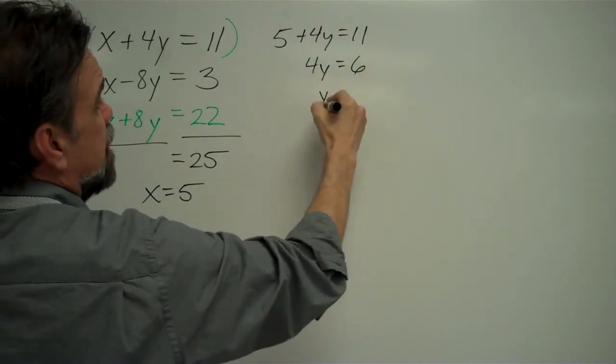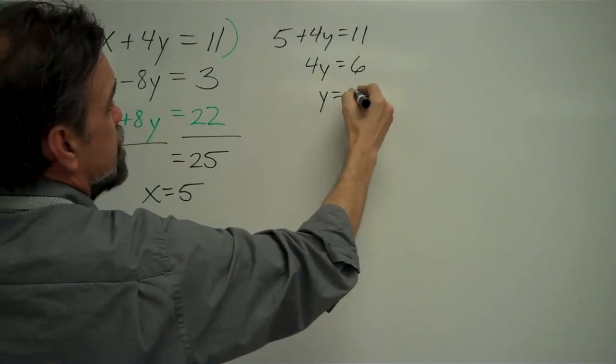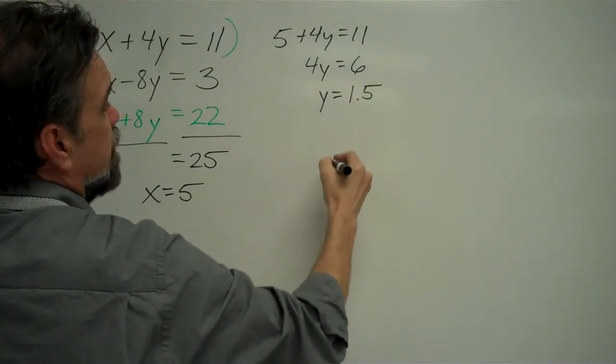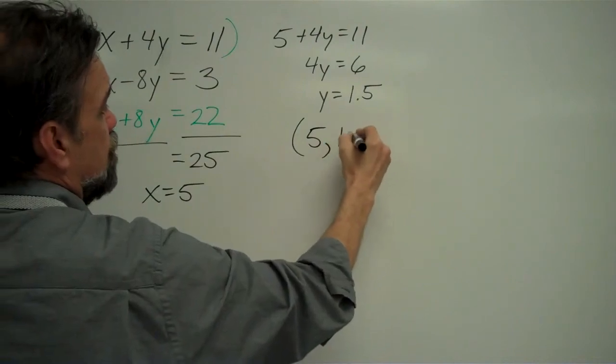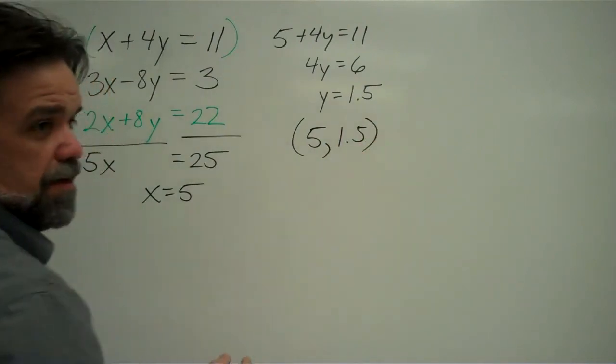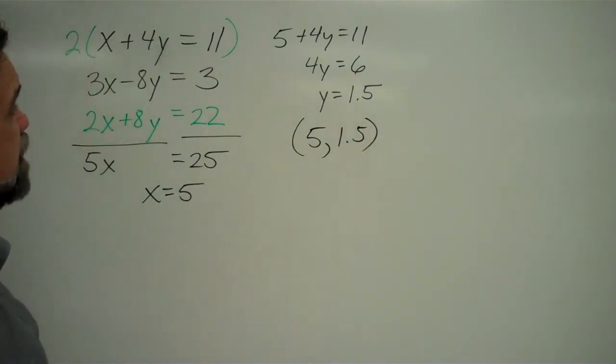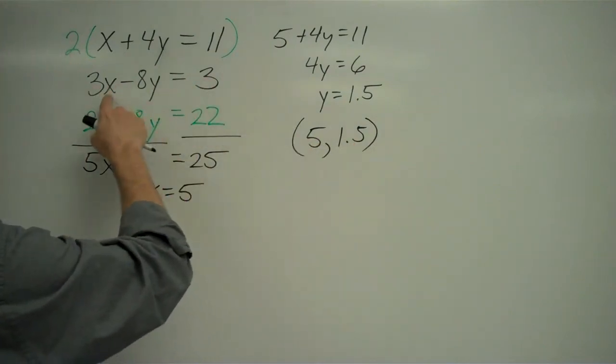Subtracting 5 from both sides I get 4y equals 6. Dividing both sides by 4 I get y equals 6 over 4, which is 1.5. So my answer is (5, 1.5).